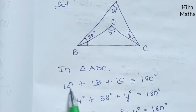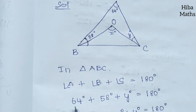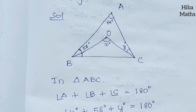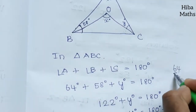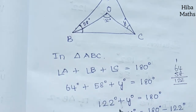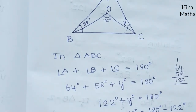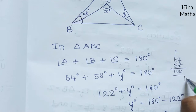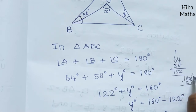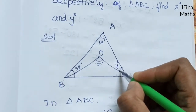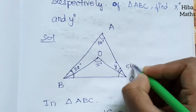In triangle ABC, angle A plus angle B plus angle C equals 180 degrees. So 64 degrees plus 58 degrees plus Y degrees equals 180 degrees. 64 plus 58 equals 122 degrees. Therefore Y degrees equals 180 minus 122, which gives Y equals 58 degrees.